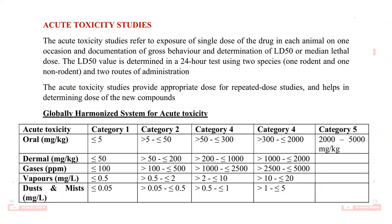Acute toxicity studies refer to exposure of a single dose, observing for 24 hours and then followed by 14 days. Acute toxicity studies provide an appropriate dose for the repeated dose studies and help in determining the dose of new compounds. Chemicals are categorized into five categories based on their LD50. You can see this table and if possible, remember it.